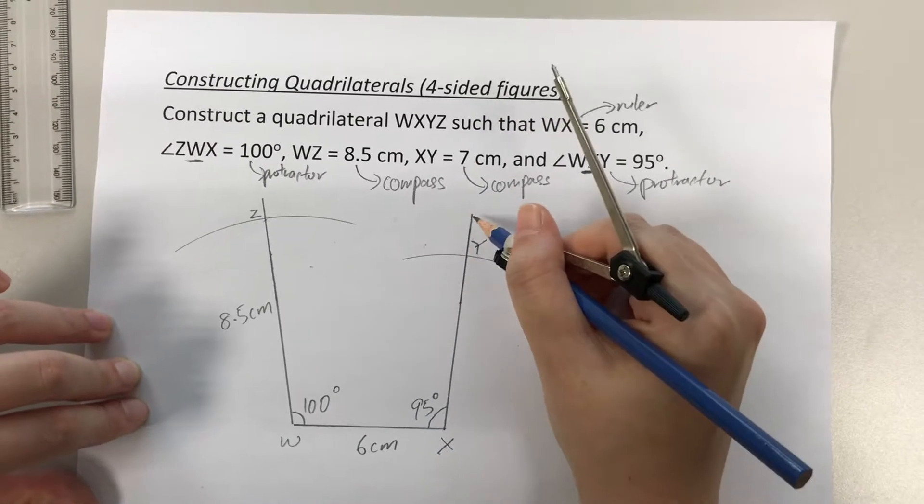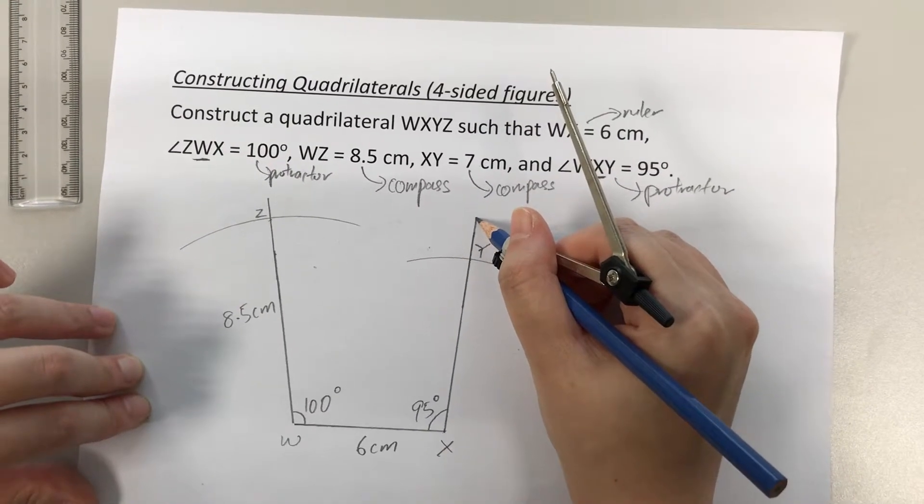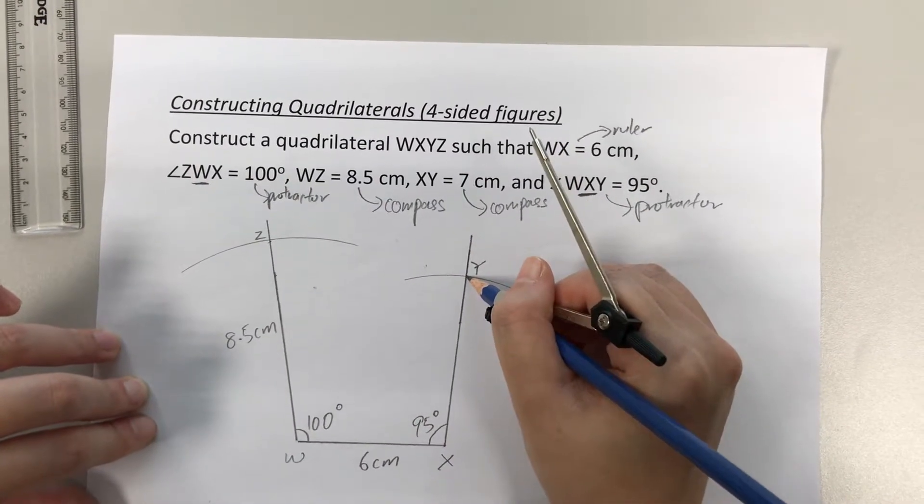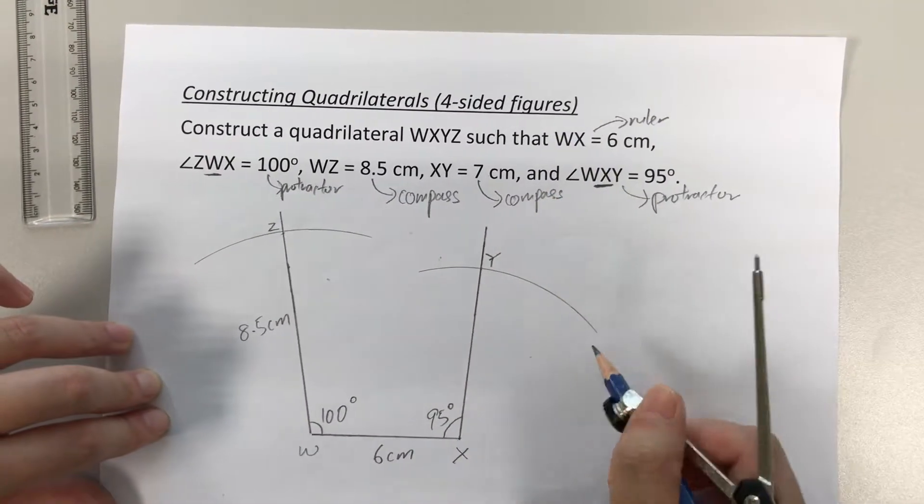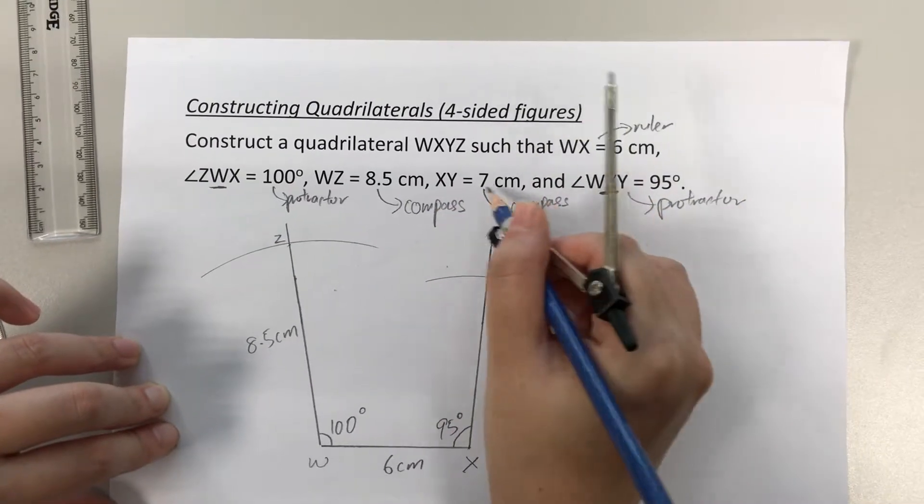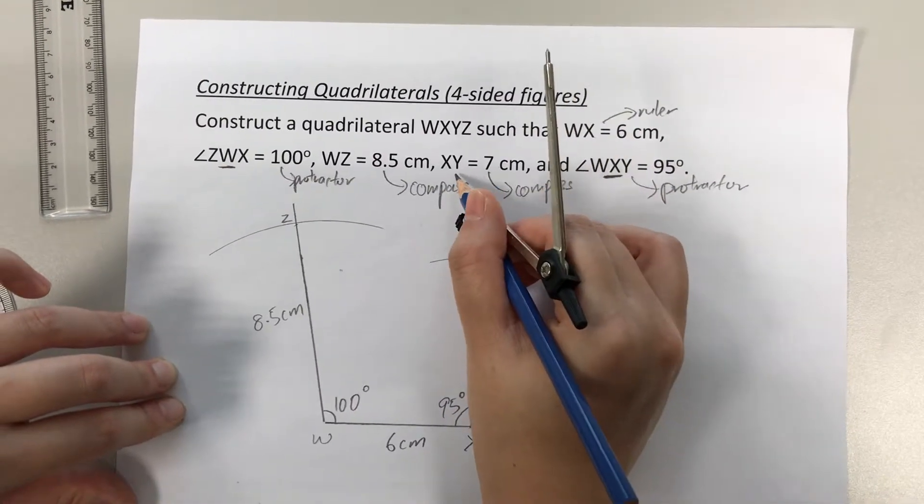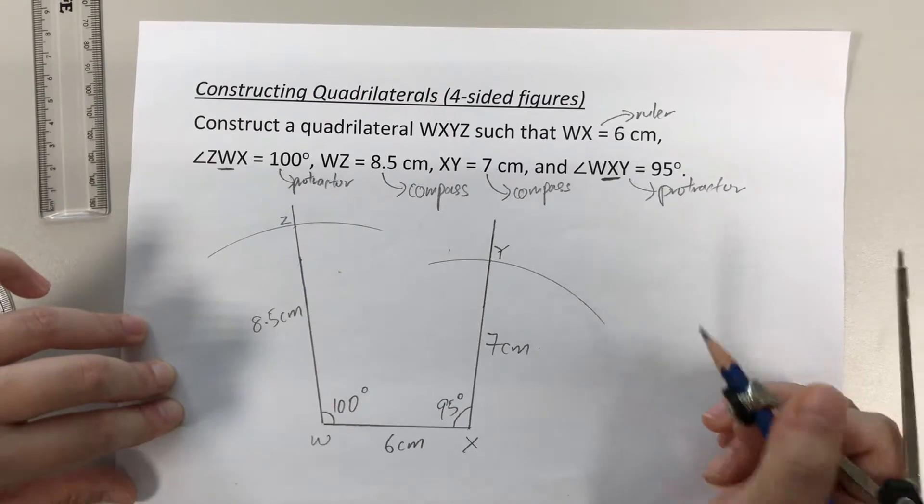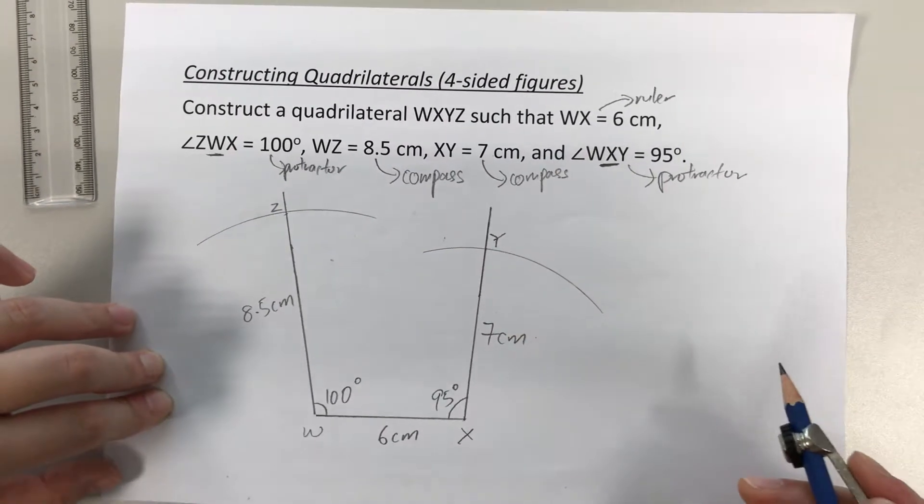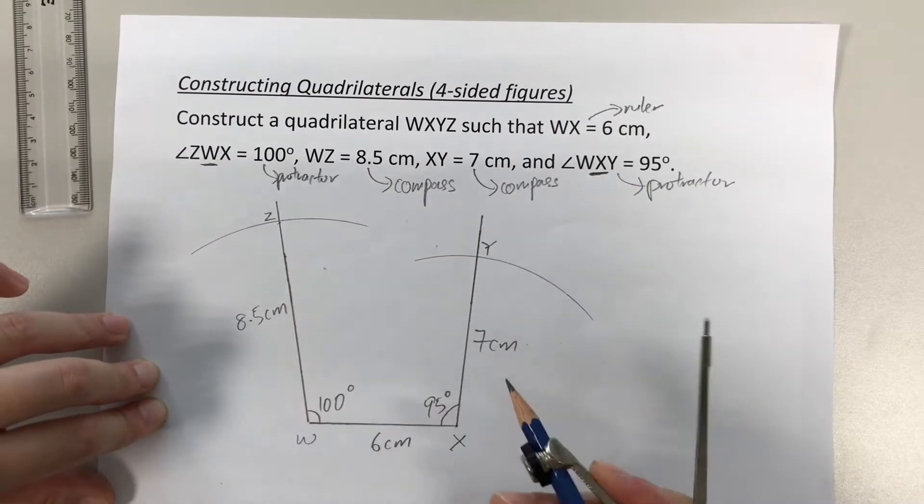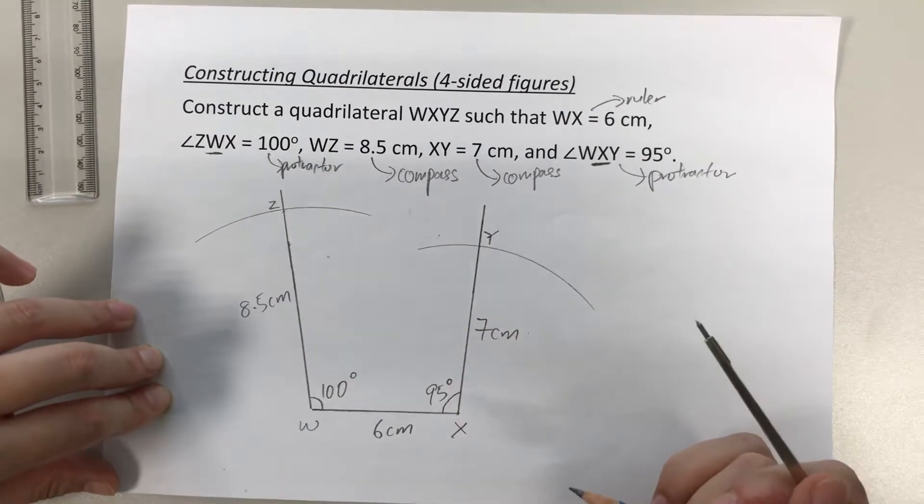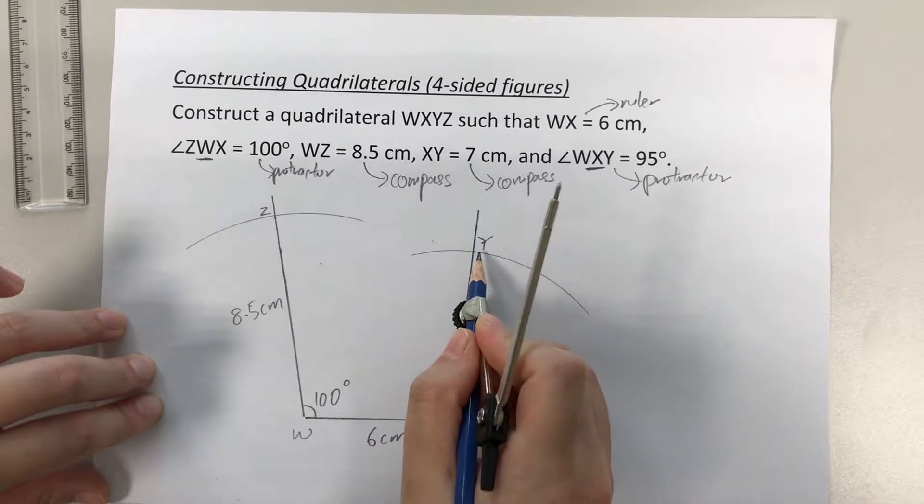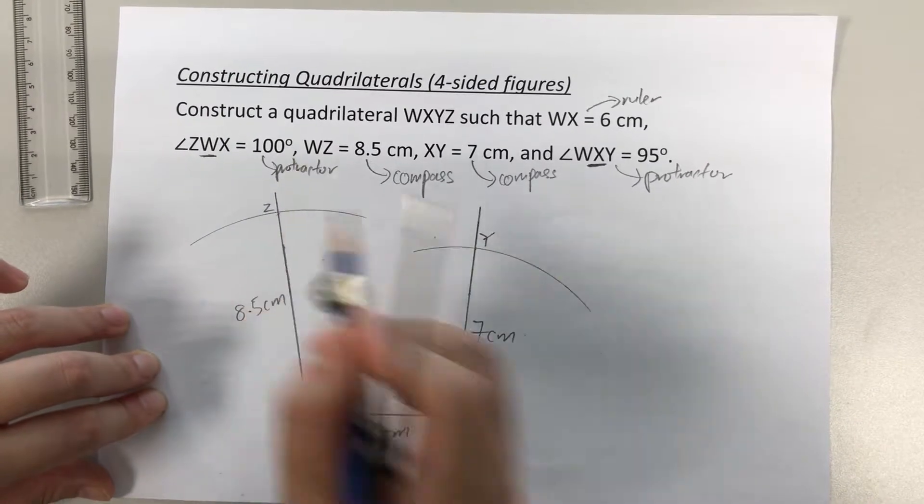It is where this curve and this line meets each other. So this point here where they meet is point Y. Again, take note: point Y is not on top. Okay, it's not where your line stops. It is where the curve and the line meets. So this is point Y. Okay, I'm just going to add on the labels that I haven't written in. X, Y, 7 cm. So this is 7 cm. Alright, so I should see a four-sided shape at the end. Okay, but obviously this looks like it only has three sides. I have to give it a fourth side. And that is by connecting point Y to point Z.